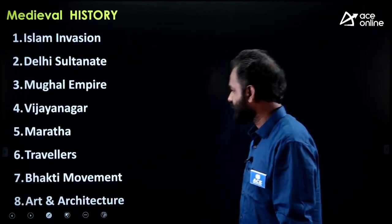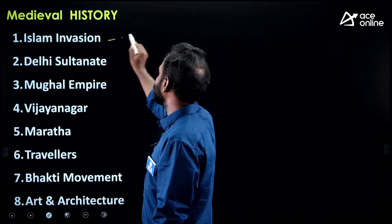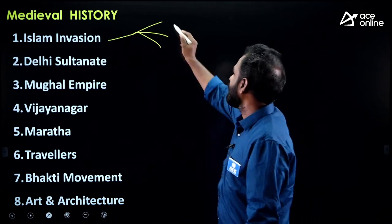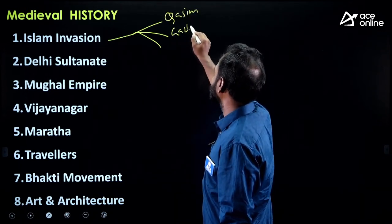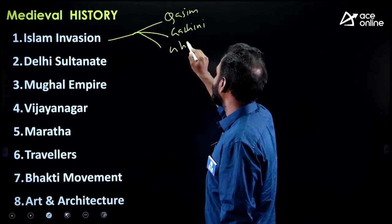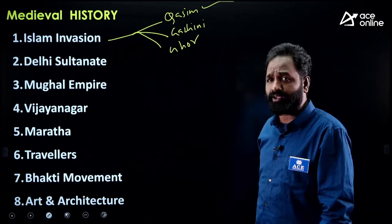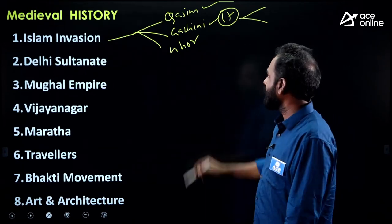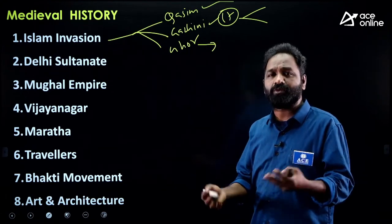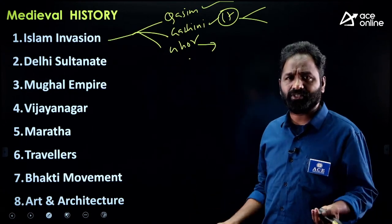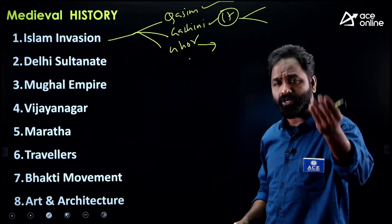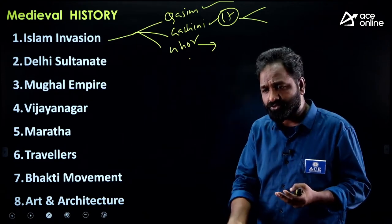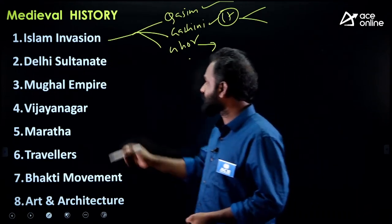For Medieval History, don't worry. For Islamic Invasions: the first Muslim to invade India was Mohammed bin Qasim; the second was Mohammed Ghazni who invaded 17 times; the third was Mohammed Ghori who established the first Islamic rule in India. Along with Ghazni came Al-Biruni who wrote Kitab-ul-Hind, and Firdausi who wrote Shah Nama. That's all — nothing more required.